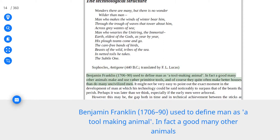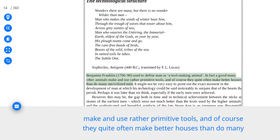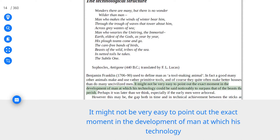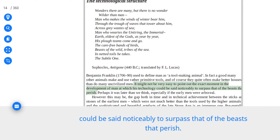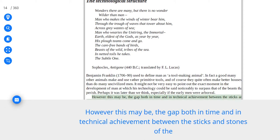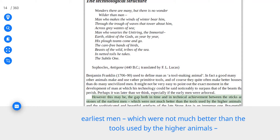Benjamin Franklin, 1706-90, used to define man as a tool-making animal. In fact a good many other animals make and use rather primitive tools, and of course they quite often make better houses than do many uncivilized men. It might not be very easy to point out the exact moment in the development of man at which his technology could be said noticeably to surpass that of the beasts that perish. Perhaps it was later than we think, especially if the early men were arboreal.